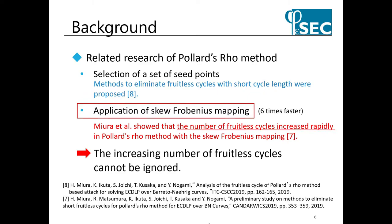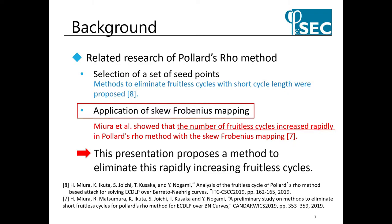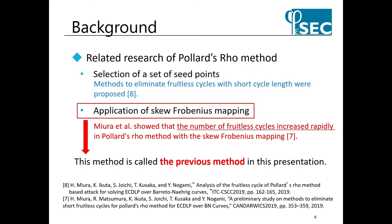A method was proposed to shorten the time to solve by using skew-Frobenius mapping. Pollard rho method with this mapping was used to solve 140-bit ECDLP. However, the problem is that applying the skew-Frobenius mapping causes an increase in the number of fruitless cycles clearly. Those fruitless cycles cannot be ignored. In the case of the fruitless cycle, it is necessary to reselect the starting point, which is very inefficient. Pollard rho method with the skew-Frobenius mapping is called the previous method in this presentation.